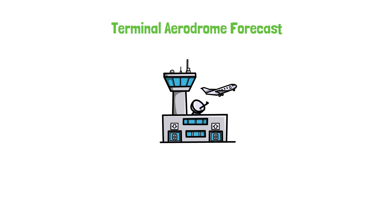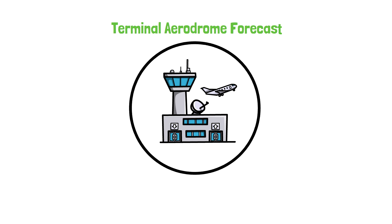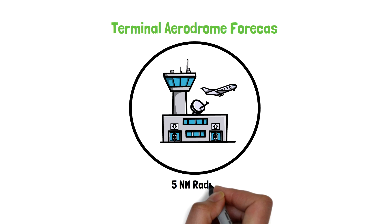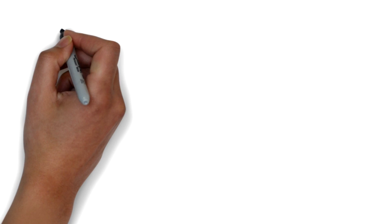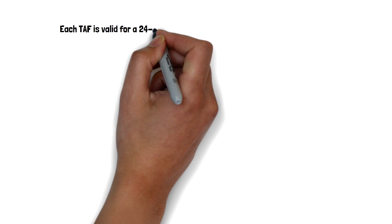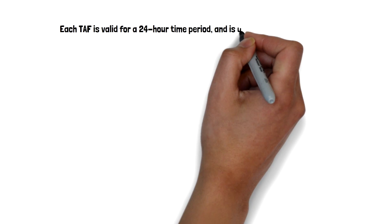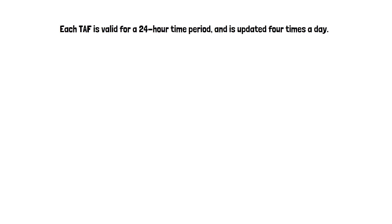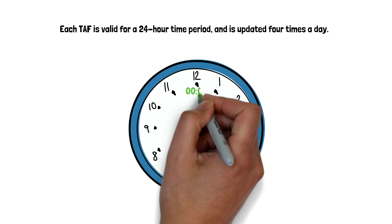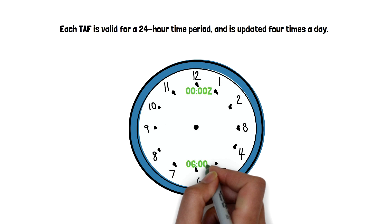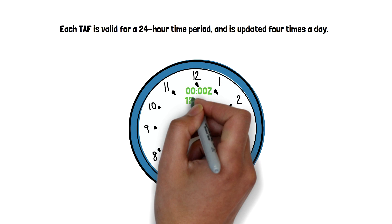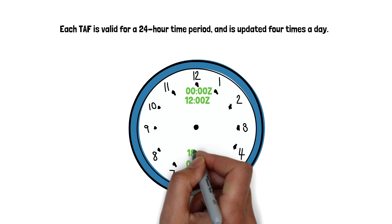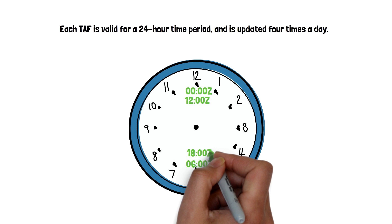TAF is an acronym for Terminal Aerodrome Forecast. A Terminal Aerodrome Forecast is a forecast established for the five nautical mile radius around an airport. TAFs are usually given for larger airports. Each TAF is valid for a 24-hour time period and is updated four times a day at 0000, 0600, 1200, and 1800 Zulu.